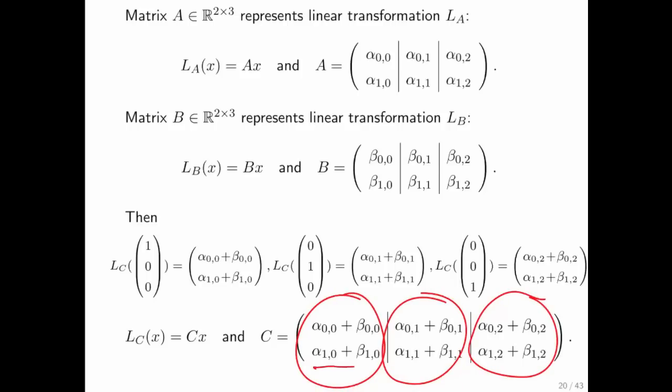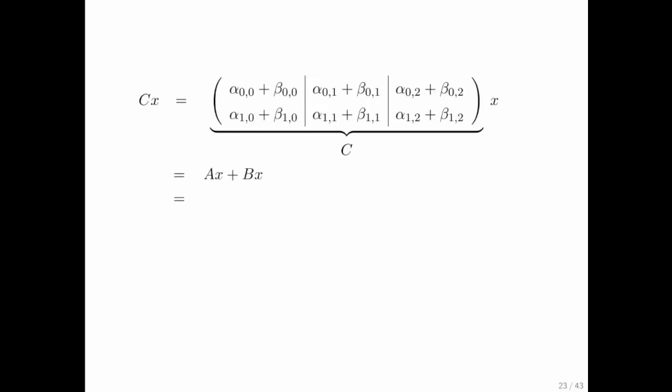Notice that all we're doing is we're adding corresponding elements together. So, let's have a look. LC is defined by this matrix times x, which is defined by A times x plus B times x.